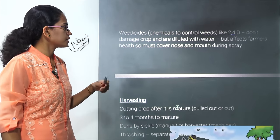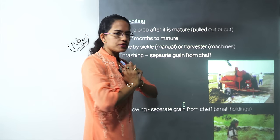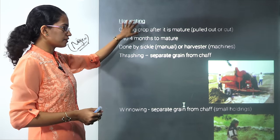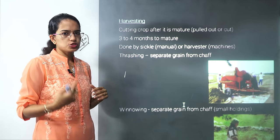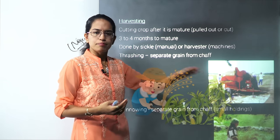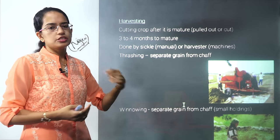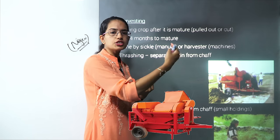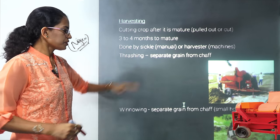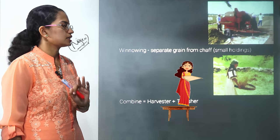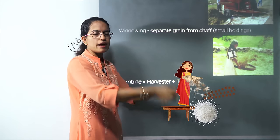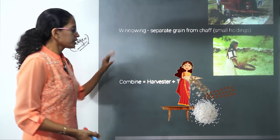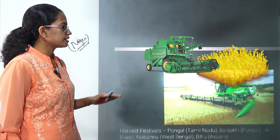After all efforts the crop is ready, and cutting the crop is known as harvesting. Any crop usually takes three to four months to mature. It can be cut by hand using a sickle or by machines known as harvesters. After cutting, the grain and the chaff are separated by a method known as threshing. The lighter chaff is removed by winnowing. A combine machine performs both harvesting and threshing together.